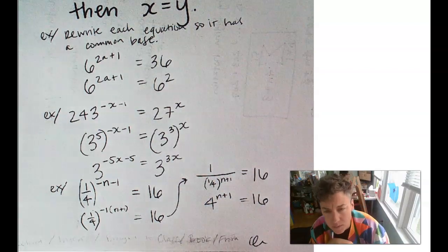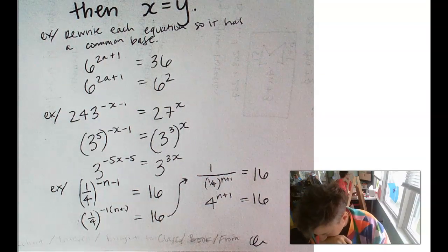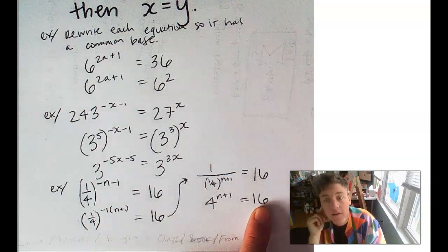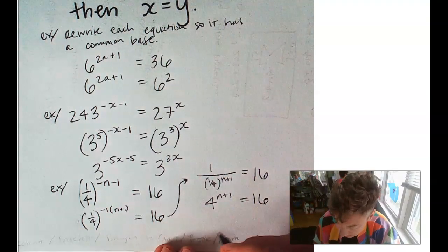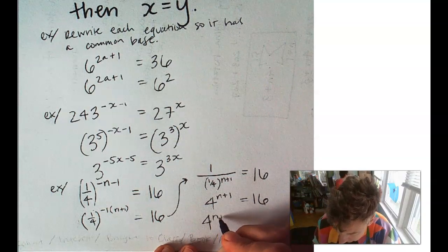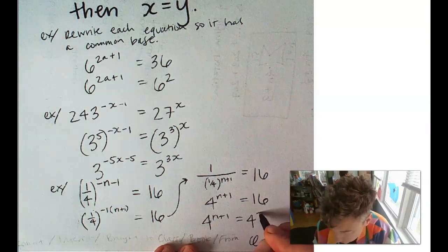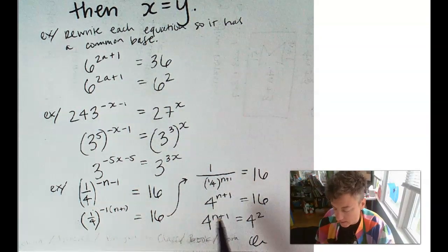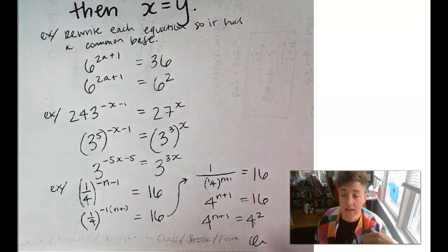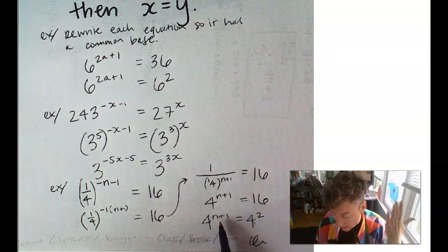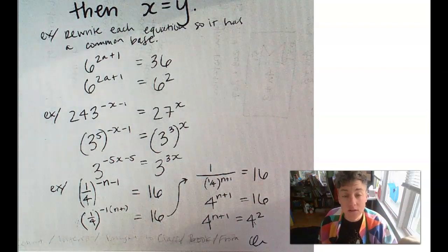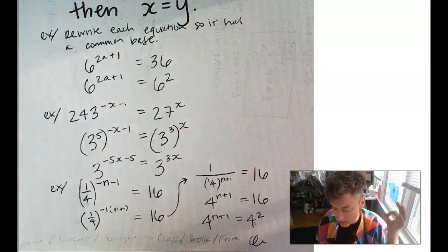Now, all is becoming clear. Here, we can write 16 as 4 squared. So, we've got 4 to the n plus 1 equals 4 squared, and now our bases are the same. Again, the next steps would be setting the exponents equal to each other and solving. Alright, cool.